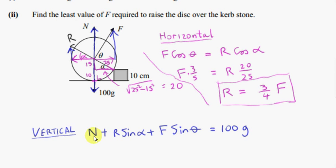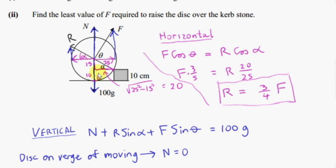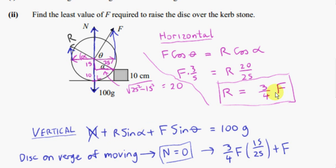Now let's consider the vertical components, shown in blue. We have R sine alpha plus N plus F sine theta, and the sum of these three upward components must equal the weight, which is 100g. If the disc is just on the verge of moving, N will drop to zero. So all we have to do is find what happens when N equals zero — we want the contact force on the disc due to the ground to vanish. We substitute N equals zero into this equation. N is gone; R is three-quarters F.